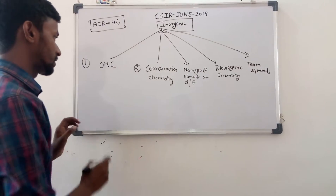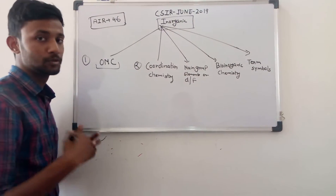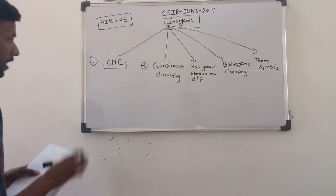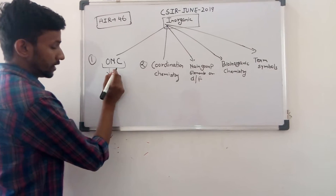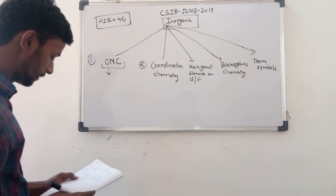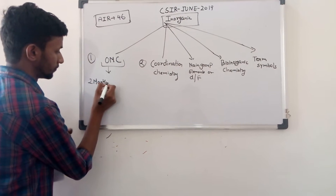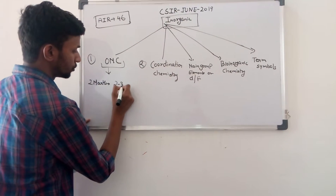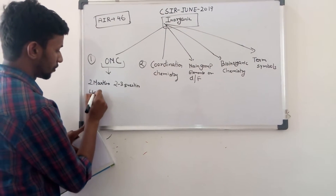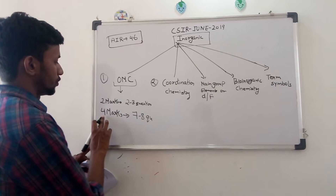Whenever you want to prepare for inorganic chemistry, always start with organometallic chemistry. Now I will give you the stats on why I focused mainly on organometallic chemistry. If you look at the weightage in CSIR, in the two-marks section around two to three questions will definitely come, and in the four-marks section around seven questions will come.